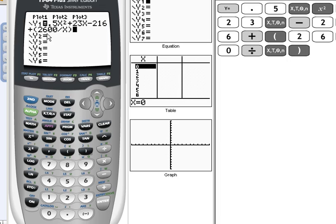And notice that here I put the 2600 over x in parentheses. That's kind of important. I always like to get in the habit of putting all fractions in parentheses, just to make sure that you don't make an order of operations error.